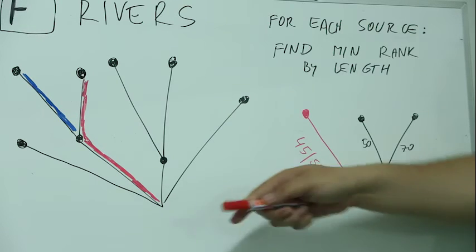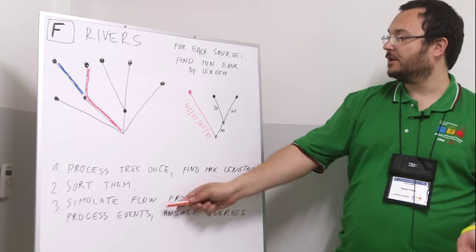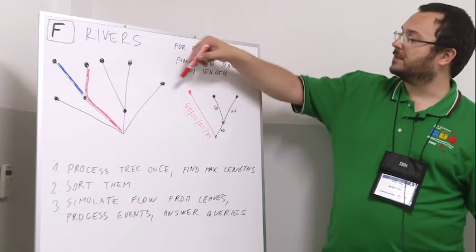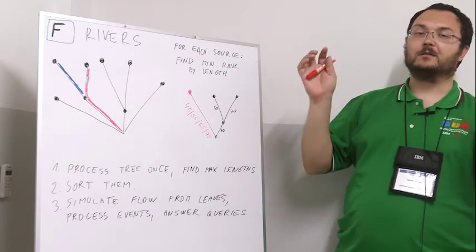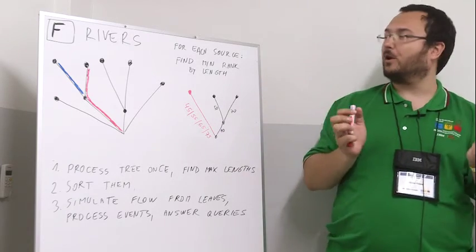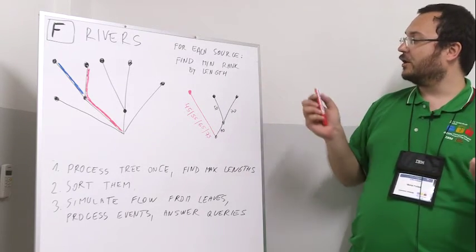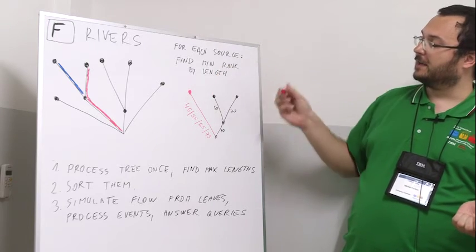We are trying to answer those events. For each of those lengths we are trying to compute the maximum number of shorter rivers and this will be done in a single simulation. What we will do is we will start at all of the leaves at the same time and we will just conceptually imagine that the rivers started flowing from all of those places.